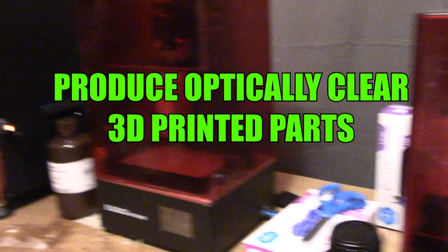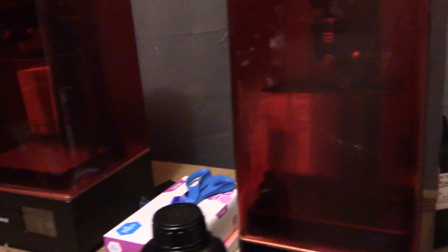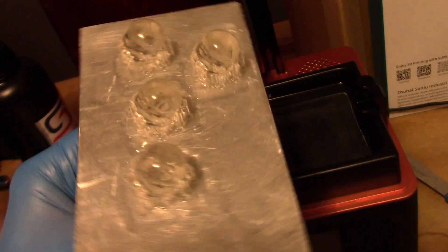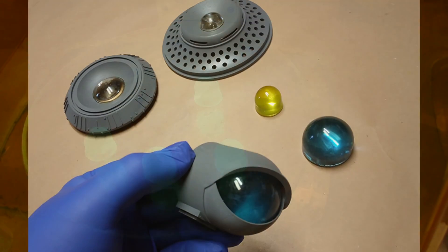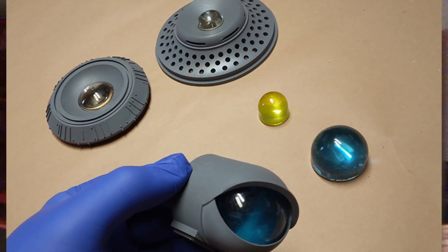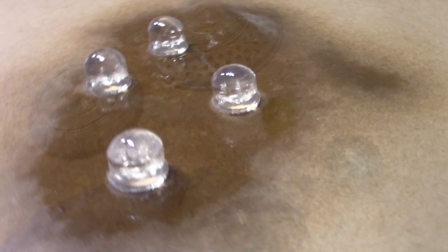Hey everyone, welcome to my family of printers. I want to do a quick video on making clear resin 3D printed parts. These would be for canopies, for lenses, anything you want clear.